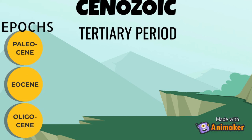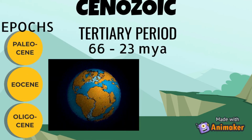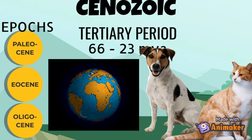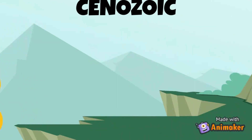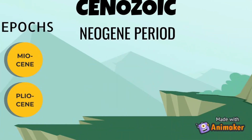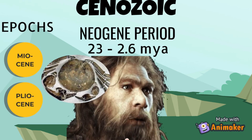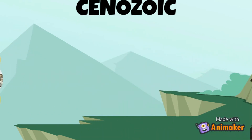The Tertiary period spans the interval between 66 to 23 million years ago. The continents headed toward their modern positions and many of the animals that we know today evolved. The Neogene period covers the Miocene and Pliocene epochs, encompassing the interval between 23 to 2.6 million years ago. The fossils found in the strata were more closely related to each other, and this period gives rise to early primates and birds flourished.